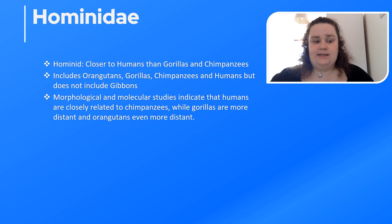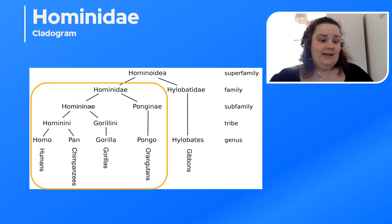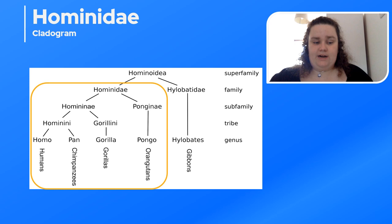Humans and chimps share roughly 98.8% of their DNA, which is just incredible. Within the Hominoidea superfamily, we can split into the Hylobatidae, which include the gibbons, and the Hominidae, which includes the Ponginae — orangutans — and the Homininae, which include the gorillas and the Hominini, which include Homo and Pan — humans and chimpanzees.